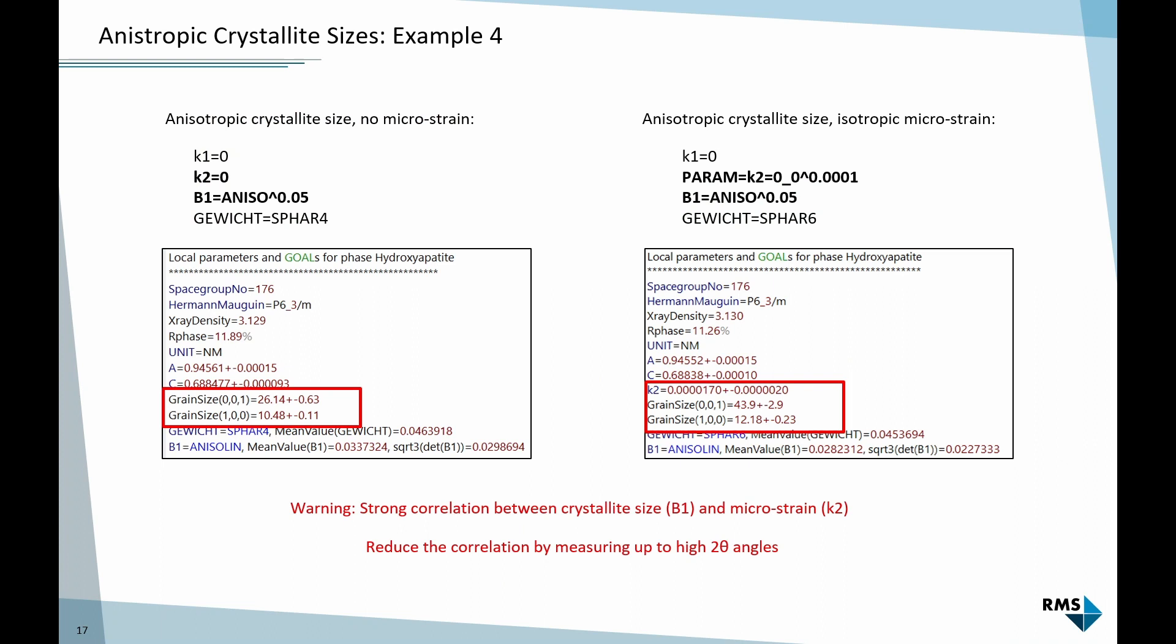The first example on the left was refined like it is shown here. K2, the microstrain parameter, was fixed at zero. Remember, both K2 and B1 contribute to peak broadening just for different reasons and in a slightly different shape. If I fix K2 at zero, I get crystallite sizes of 26 and 10 nanometers. But if I also refine K2, suddenly I get crystallite sizes of 44 and 12 nanometers. This shows there is a strong correlation. These two parameters affect each other.